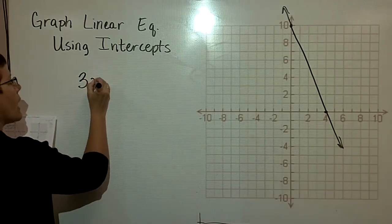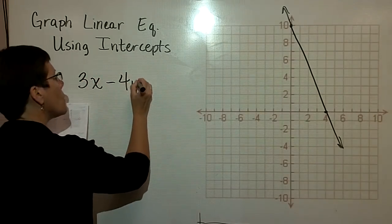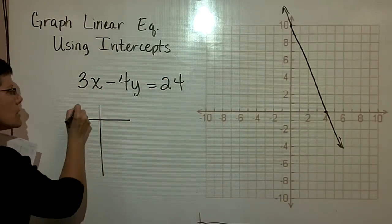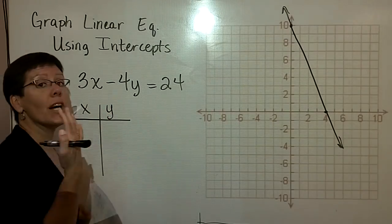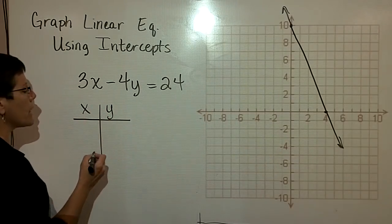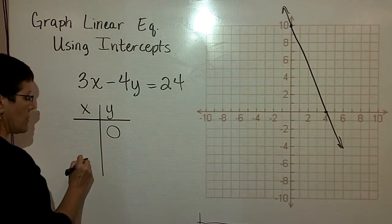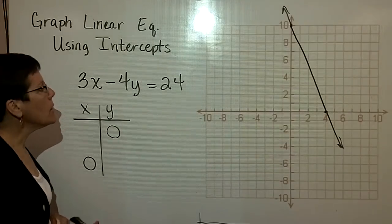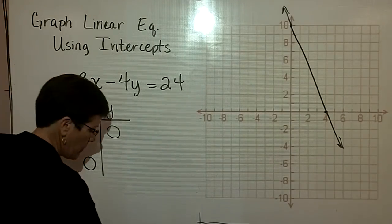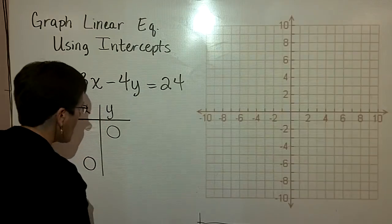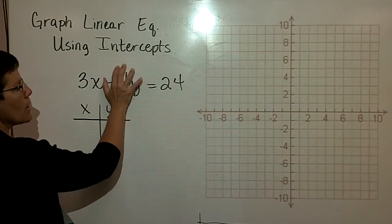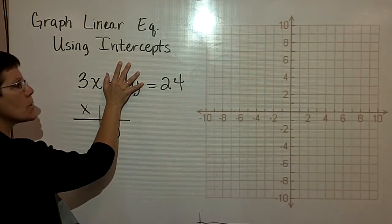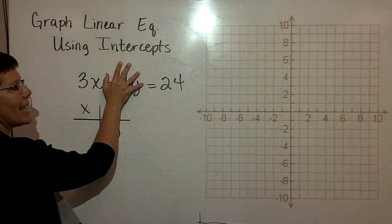Here's another one. So I have 3x minus 4y equals 24. And it doesn't really matter. I'd like you to understand which one is the x-intercept and which one is the y-intercept. Here's the x-intercept. Here's the y-intercept. But essentially, you just have to put a zero in for each variable. So I'm going to erase this one so we don't confuse it. When y is equal to zero, I cover up that term, and I divide both sides by 3 to solve for x, and x is equal to 8.